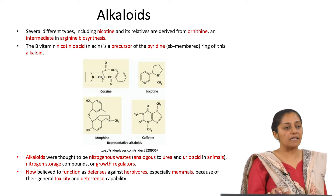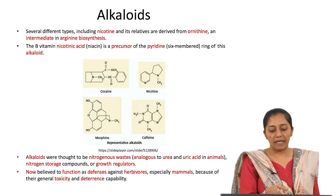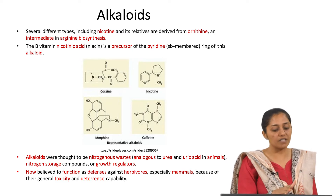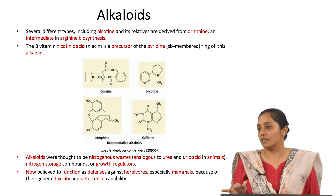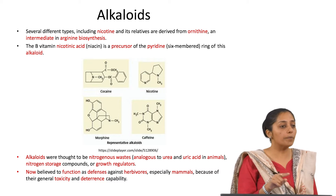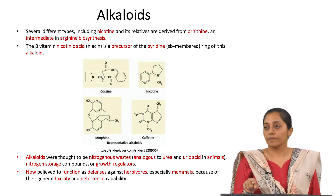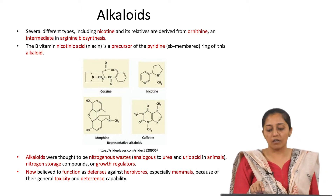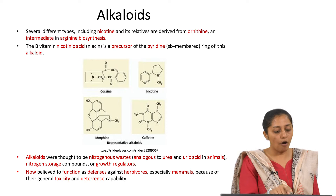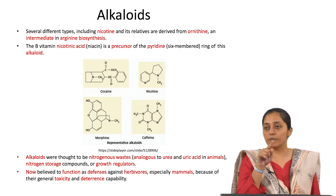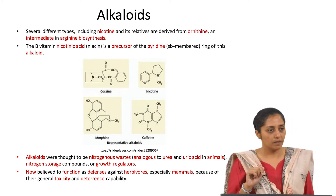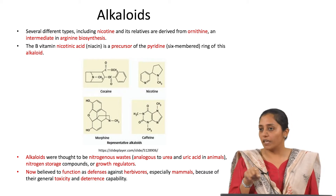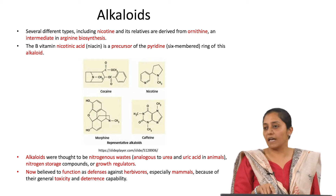For nicotine, its backbone is obtained from ornithine, which is a precursor and intermediate in arginine biosynthesis. Ornithine is a non-proteinaceous amino acid. The B vitamin nicotinic acid is a precursor of the pyridine moiety of the alkaloid nicotine. The pyridine moiety is the nitrogen-containing ring with formula C5H5N, obtained from nicotinic acid.